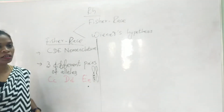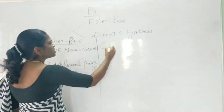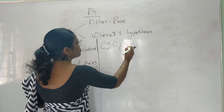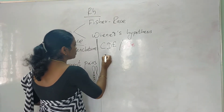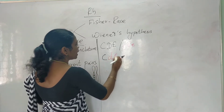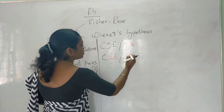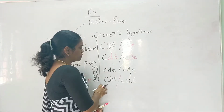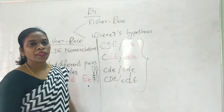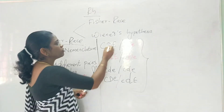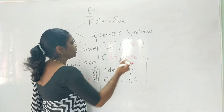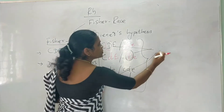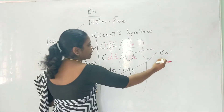The possible genotypes of these alleles may be CDE, CdE, cDe, or cde combinations. According to Fischer and Reiss, wherever you can find capital D in the genotype, the blood group is Rh positive and the individual will have the D antigen.